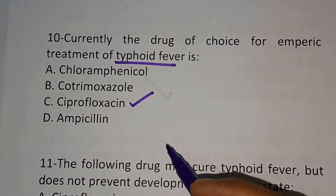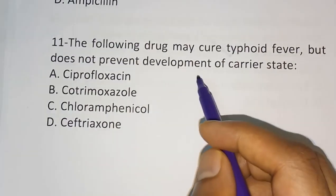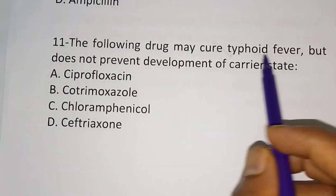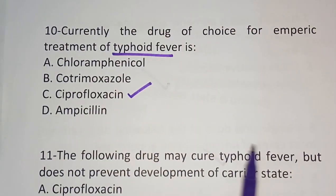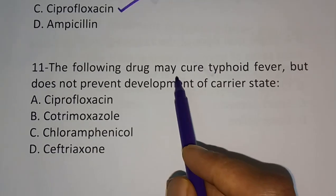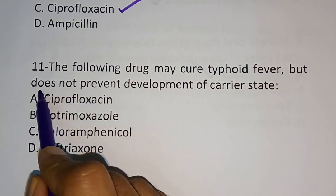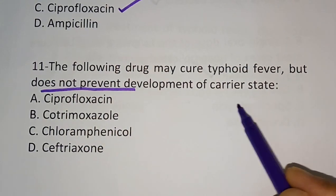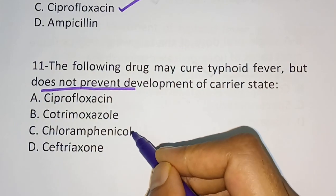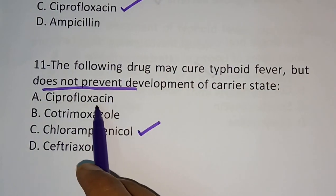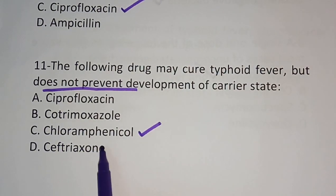Question eleven: the following drug may cure typhoid fever but does not prevent development of carrier state. Options are: ciprofloxacin, co-trimoxazole, chloramphenicol, ceftriaxone. The correct answer is option C, chloramphenicol. In case of ciprofloxacin it can prevent development of carrier state, but chloramphenicol does not prevent development of carrier state.